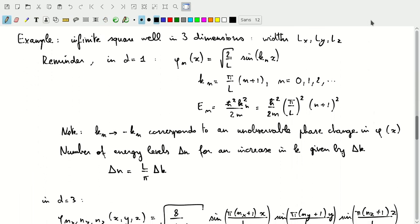Let's look at a specific example, extending our treatment of the one-dimensional infinite square well. Now we're looking at a square well that has a width L_x, L_y, and L_z in the x, y, and z directions. Remember in one dimension, our solutions there were √(2/L) times the sine of k_n times x.